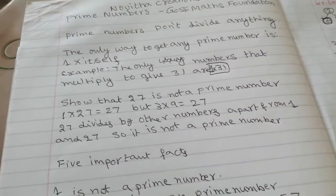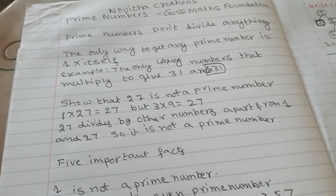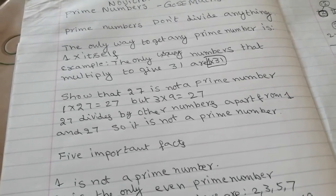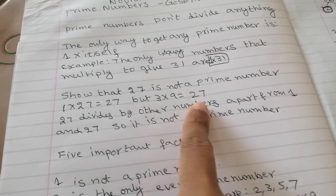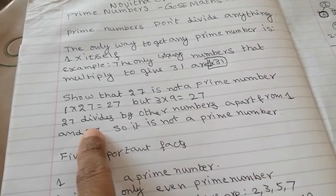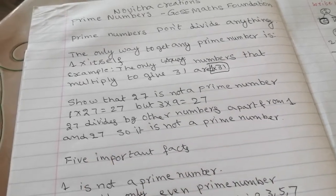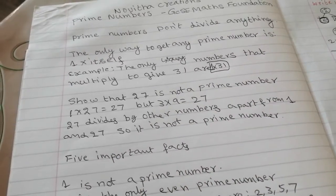So why 27 is not a prime number? Because it times itself with 1. At the same time it times with 3 times 9 equal to 27. So 27 divides by other numbers apart from 1 and 27. So it is not a prime number.